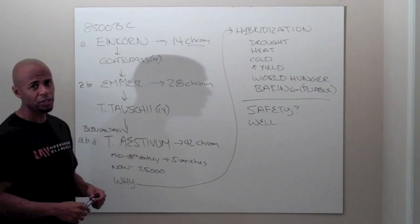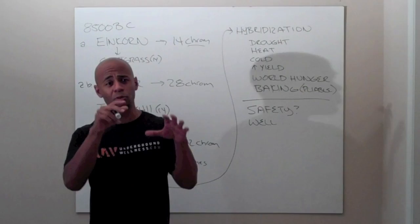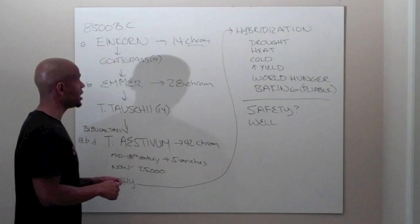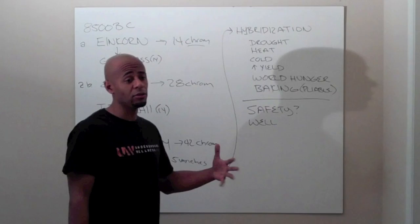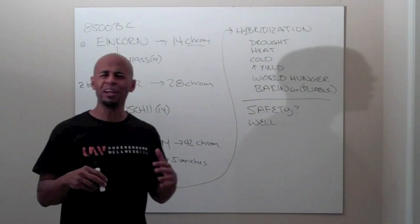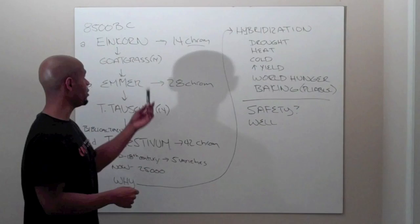First off, we're going to go way, way, way back to 8500 BC. We're going to the Fertile Crescent, the area where Israel and Syria and Iraq are. We're going to talk about a particular people, a hunter-gathering people called the Natufians. They hunted and gathered, but they also harvested something called einkorn. Einkorn is one of, if not the earliest form of wheat.